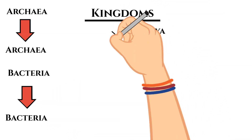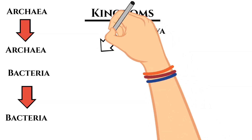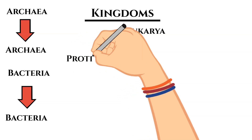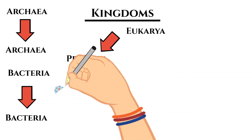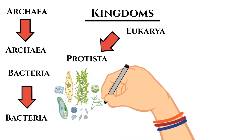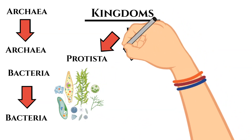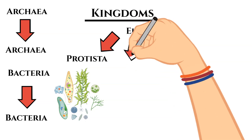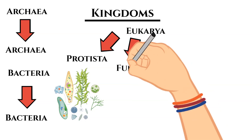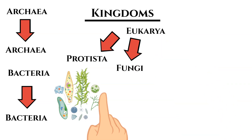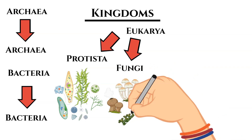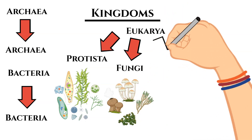The other four kingdoms are all part of the Eukarya domain. The third kingdom is Protista, which includes protists — single-celled organisms — with examples such as algae and protozoans. The fourth kingdom is Fungi. Most fungi have many cells, typically arranged in thread-like groups. Examples include mushrooms, yeasts, and molds.